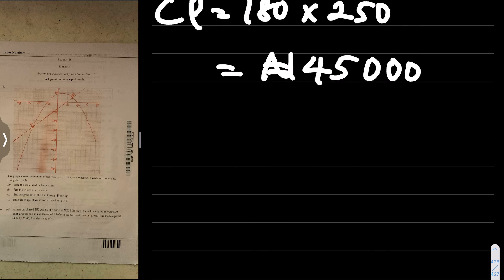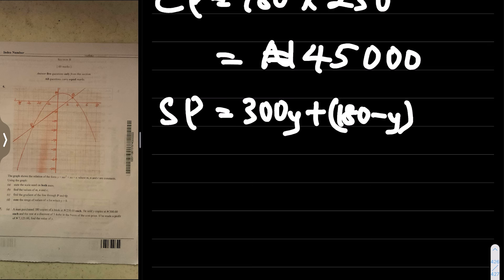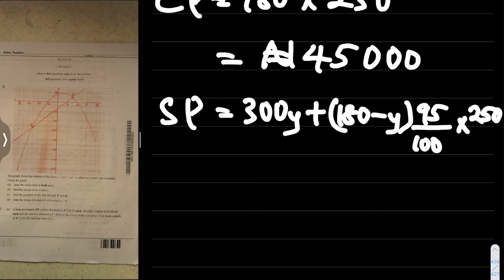Now what's the selling price? He sold y copies at 300 naira each, and the rest at a discount of five kobo in the naira of the cost price. So the total selling price will be 300 times y, plus the remaining (180 minus y). The remaining were sold at a discount of five kobo, meaning 95 kobo in the naira, which is 95/100 times 250.